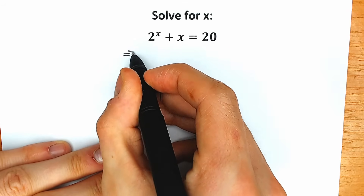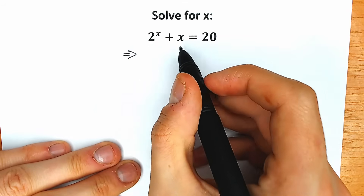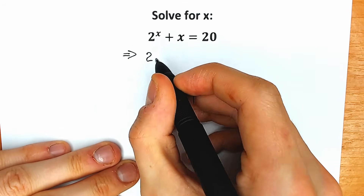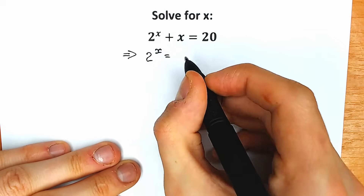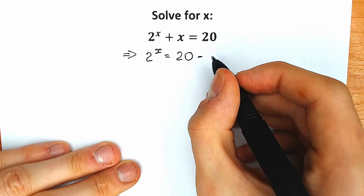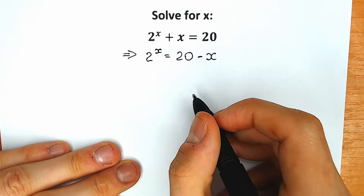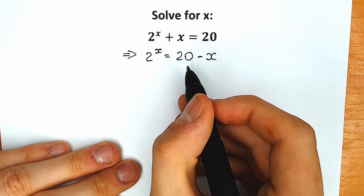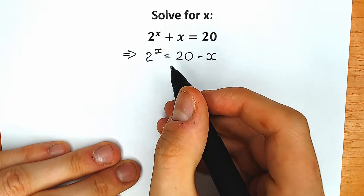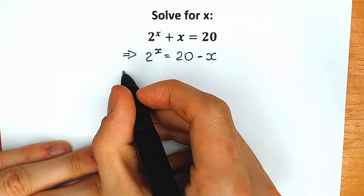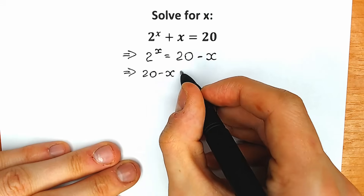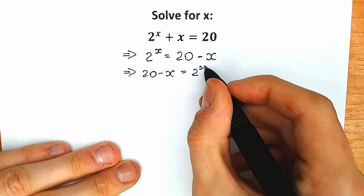First of all, I'll show you a really interesting step. Let's write this x on the right side with the negative sign. So as a result we have 2 to the power x equal to 20 minus x. This is our first step. Now let's change position a little bit — let's write 20 minus x on the left side and 2 to the power x on the right side, since we have an equal sign.